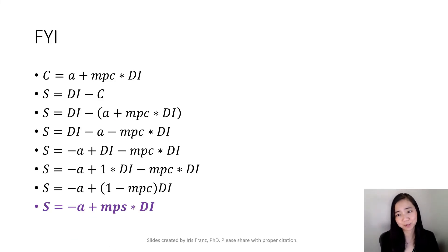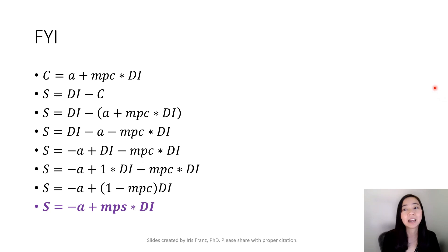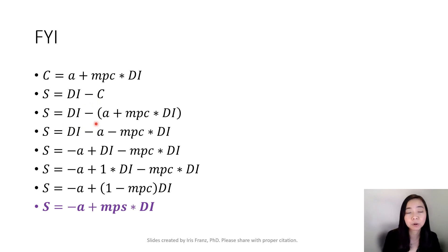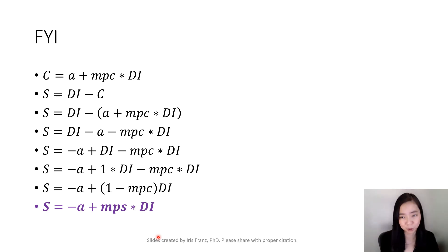This slide shows how I derive the savings schedule, in case you are interested in the calculation. Our consumption is equal to autonomous consumption A plus MPC times disposable income. I also know that saving is equal to disposable income minus consumption. Substituting the consumption expression with A plus MPC times DI, and applying some algebraic manipulation, you eventually get: saving is equal to negative autonomous consumption plus MPS times disposable income.